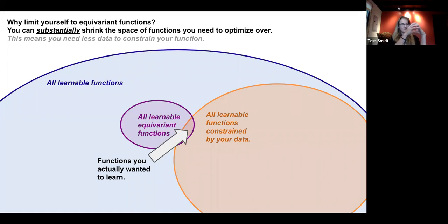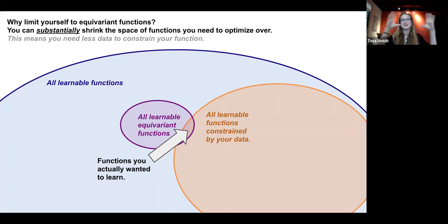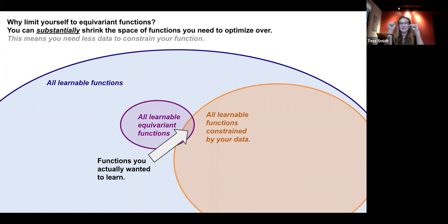If you consider all learnable functions constrained by your data versus equivariant functions — by constraining your network to be equivariant, your data goes much further because you're being a lot more specific, narrowing in on which function you want. Question: do we need to implement G as a neural network layer? No — this is just a property of the function, a condition your neural network satisfies. You never have to know what G is because you prove it for all G. This is really interesting because you don't have to know the symmetry of the object for the symmetry to be preserved by the network.